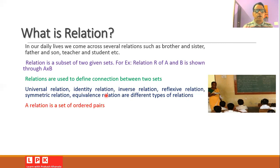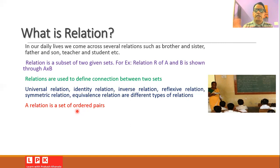A relation can also be defined as a set of ordered pairs where the first element is from the first set and the second element is from the second set.